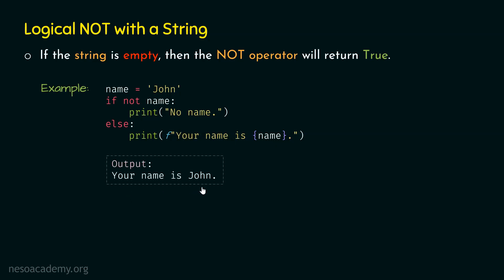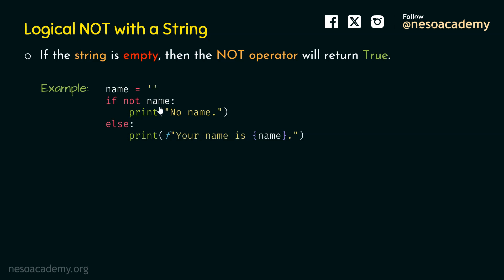Now let's see what happens when name is empty. When name is empty, at runtime this name will be replaced by the empty string, and not of an empty string is true. Therefore, 'no name' will be printed on the screen. Hence, the output of this program is 'no name'. I hope it is clear how logical not with a string works.